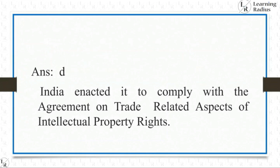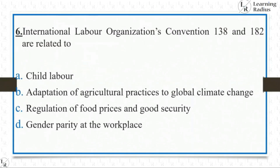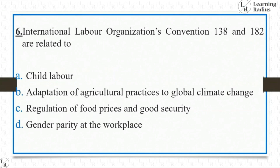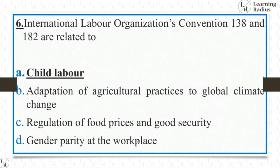The next question is related to International Labour Organization Conventions 138 and 182, which are related to: child labour, adaptation of agricultural practices to global climate change, regulation of food prices and food security, or gender parity at the workplace. These ILO Conventions were in the news at the time and are directly related with child labour.